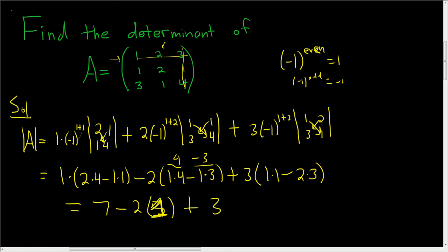And then plus 3, 1 minus 6. So that's 3 times negative 5. This is 7 minus 2. 4 minus 3 is 1. So 7 minus 2. 2 times 1 is 2. Here we get a 15. So here you get 5 minus 15. So you get 5 minus 15. So 5 plus negative 15, that's negative 10.